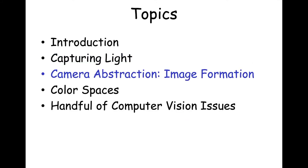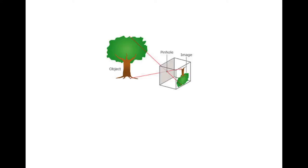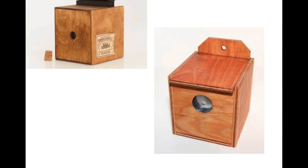In computer vision, we use a camera that abstracts what happens in the human eye. The so-called pinhole camera looks a lot like an eye — instead of a pupil you have a pinhole, light from an object reflects through the pinhole, rays cross and come to rest on the image plane, which is like the retina. This pinhole camera was a literal concept — early cameras from the late 1800s actually had a pinhole in a piece of paper or foil.